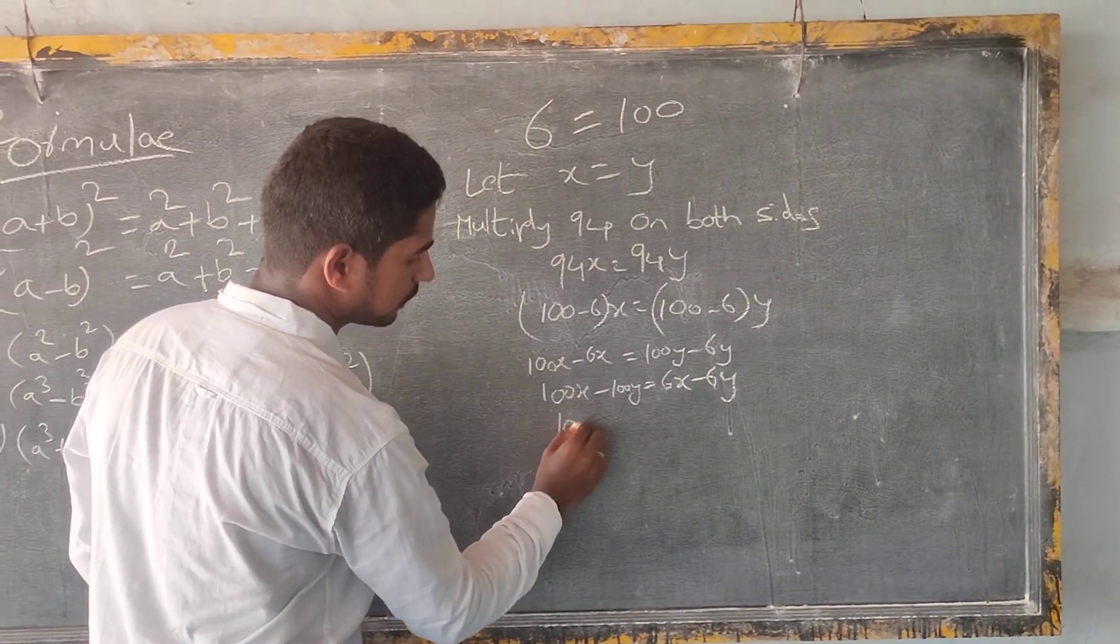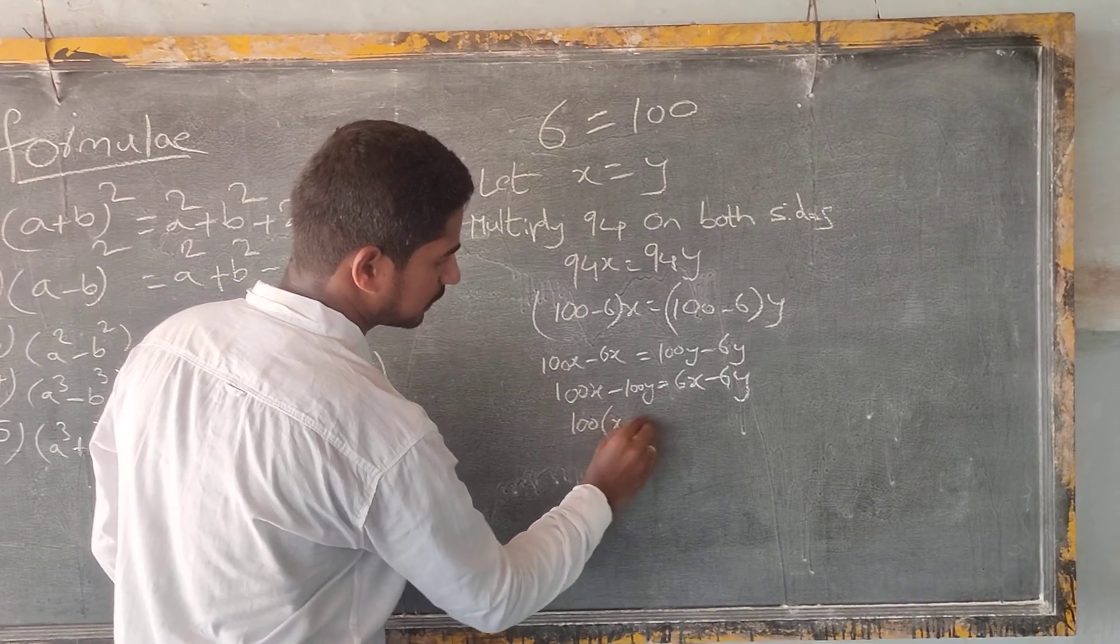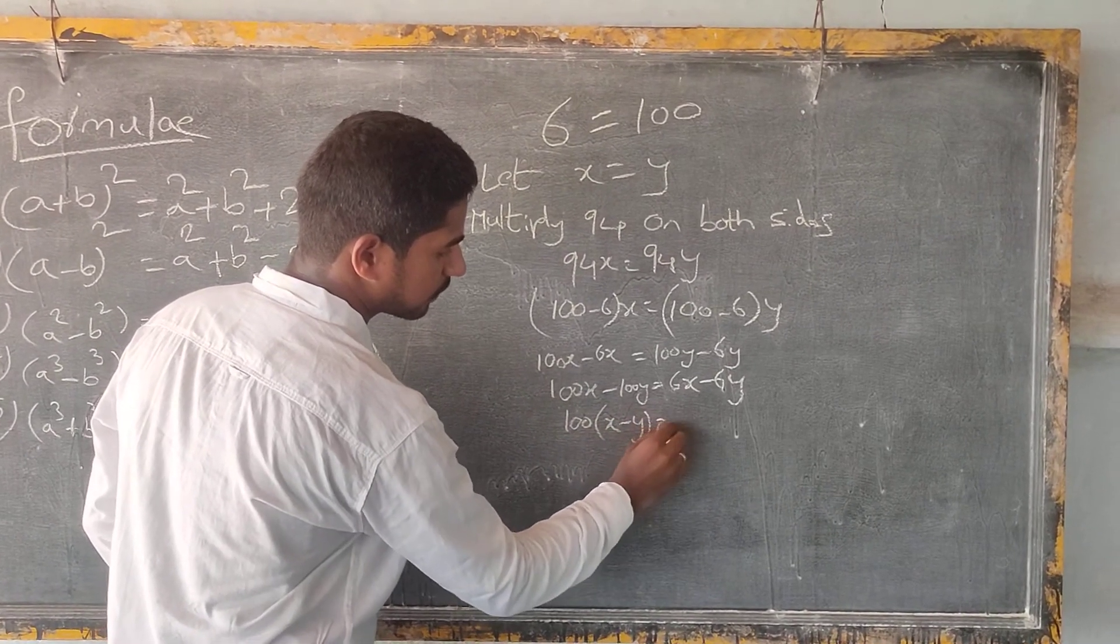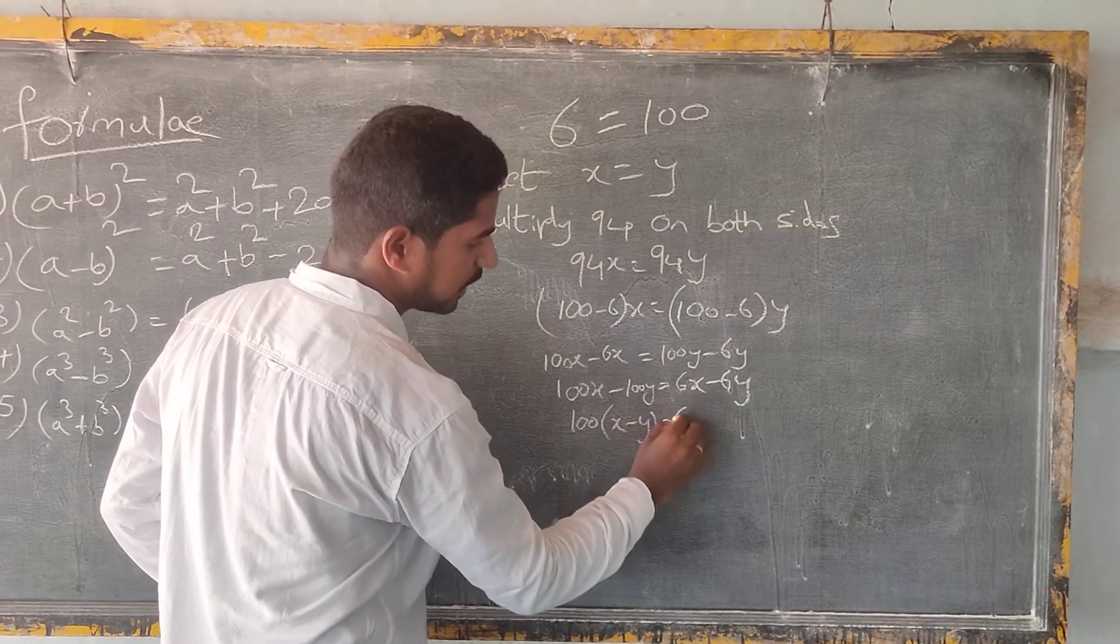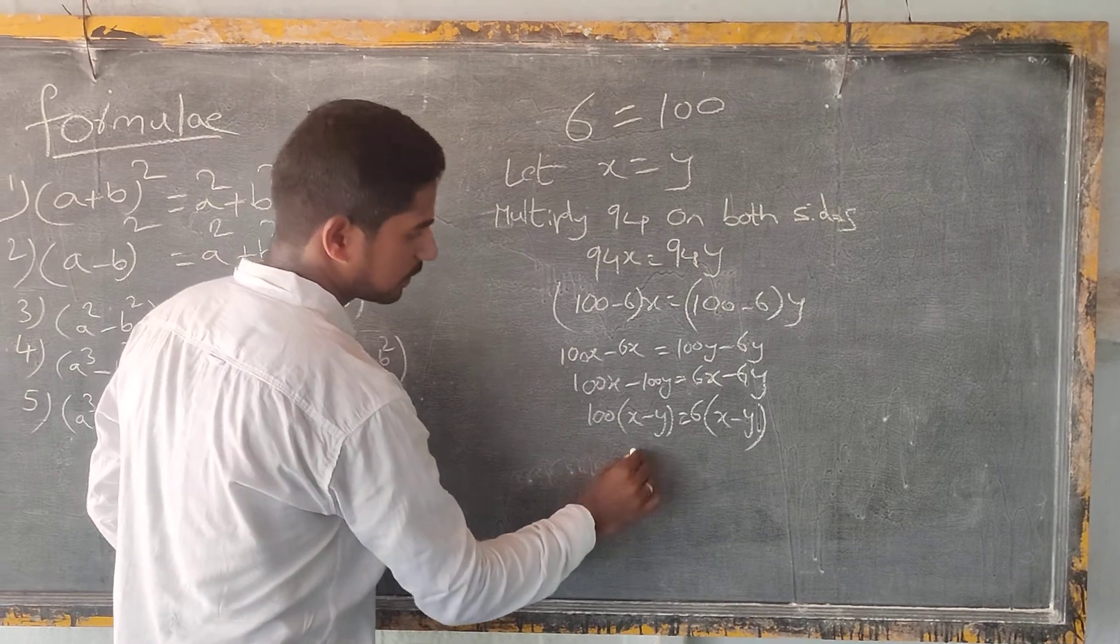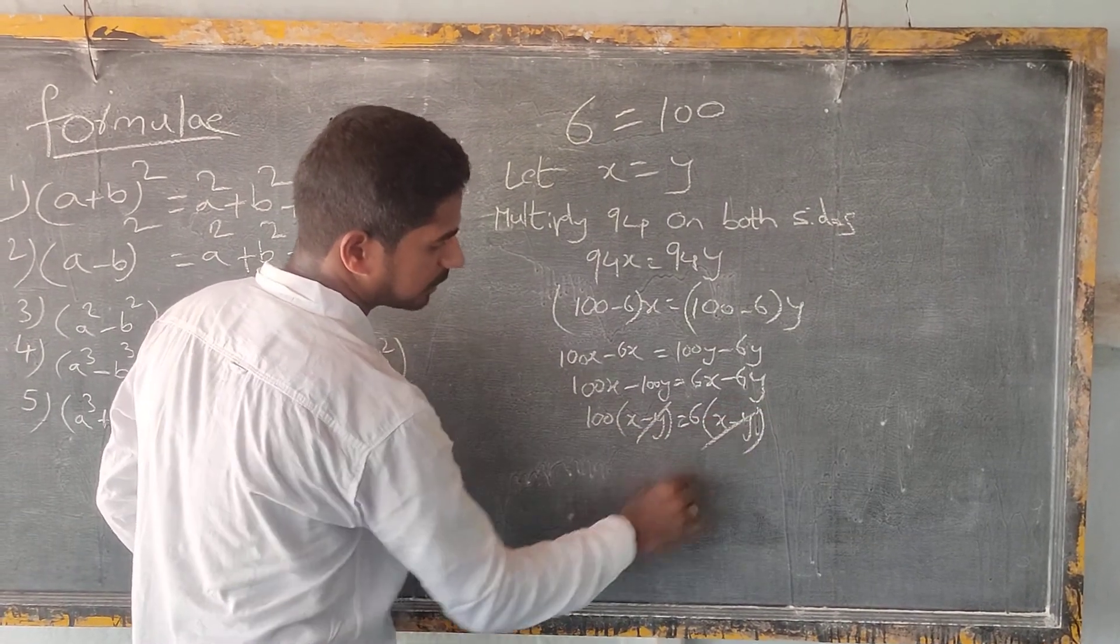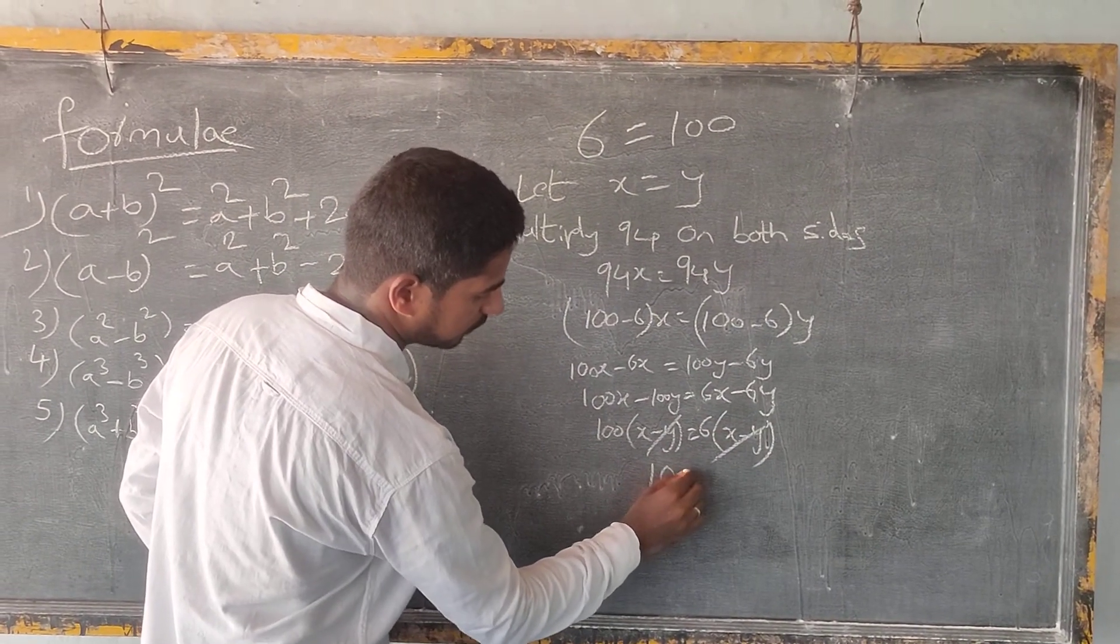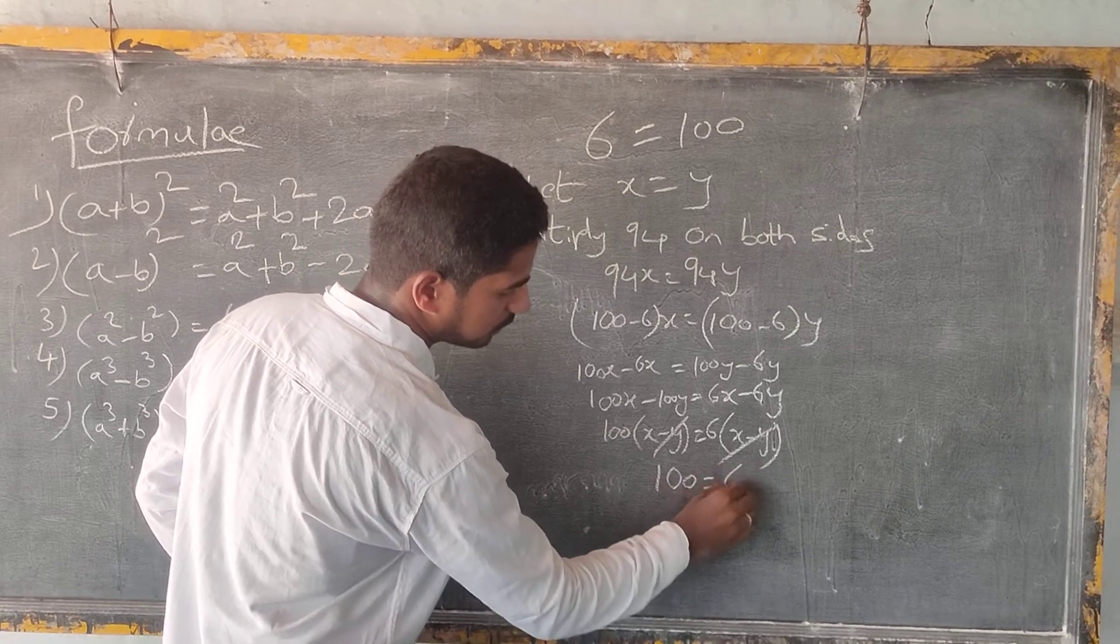Take common hundred. X minus y. In this, take six as common, x minus y. X minus y, x minus y cancel. That is equal to hundred is equal to six.